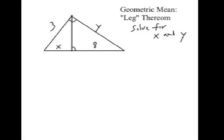In this triangle, we're solving for X and Y, and we are going to use the geometric mean theorem that talks about the leg of the right triangle. In this case, the leg of the right triangle is 3 that we're talking about, and we're trying to solve for X and Y.